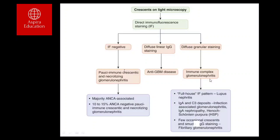On immunofluorescence microscopy, we look mainly for complement proteins and antibodies. If you find a lot of antibodies and complement in the biopsy, we consider immune complex glomerulonephritis. If you find antibodies staining only along the basement membrane, you consider anti-GBM disease. If you find no antibodies and no complement, you consider pauci-immune necrotizing glomerulonephritis.